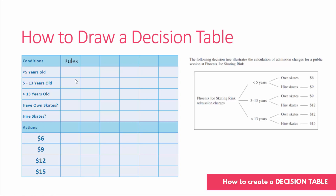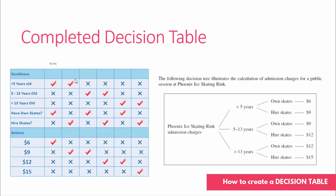A completed decision table — you can see here that I've filled it up with ticks and crosses. For the first rule, if the child is less than five years old and has their own skates, they only pay six dollars.